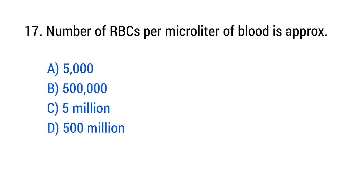Question number 17. Number of RBCs per microliter of blood is approximately — the right answer is option C, 5 million.